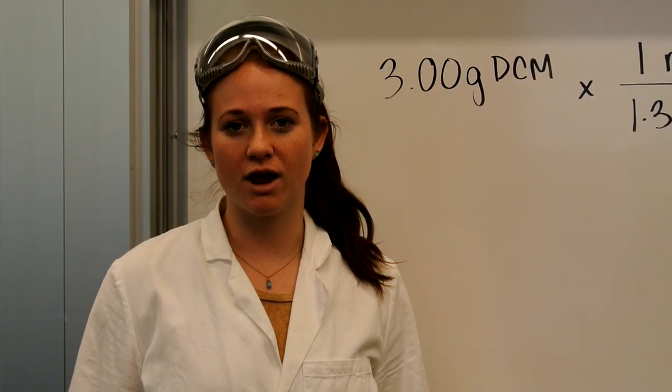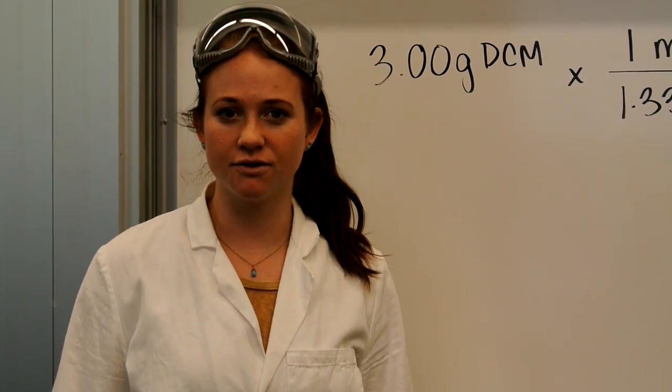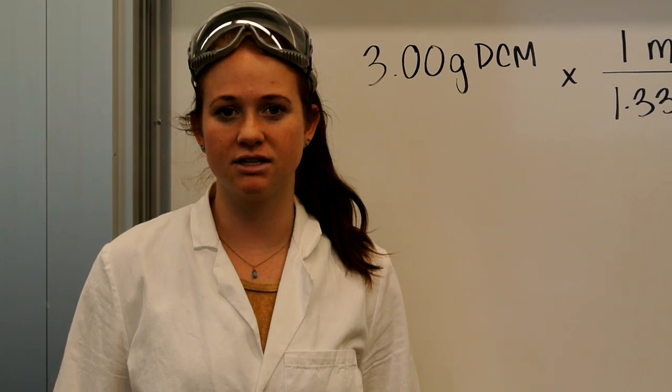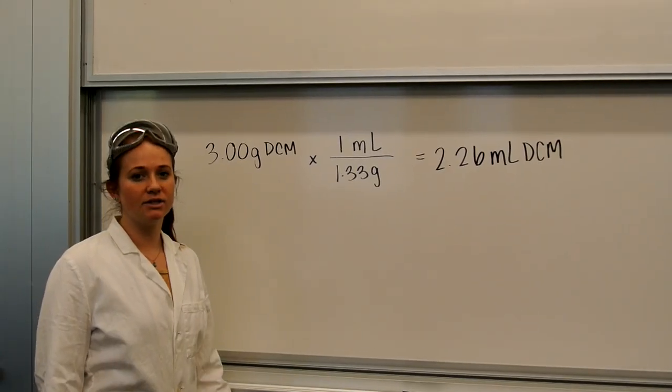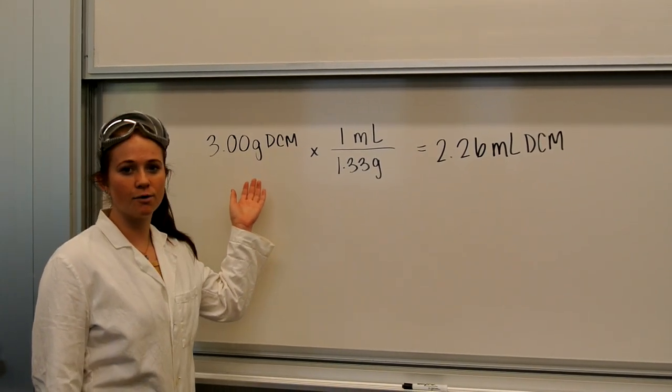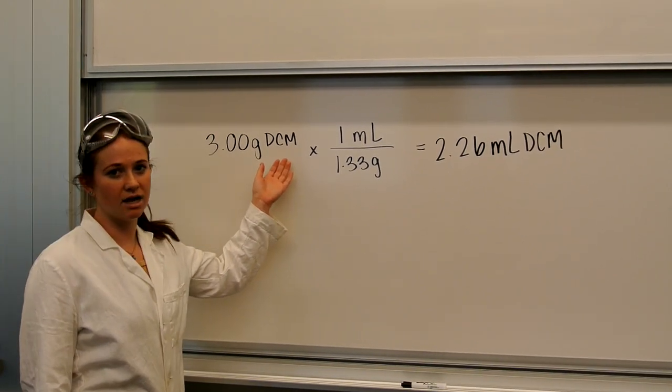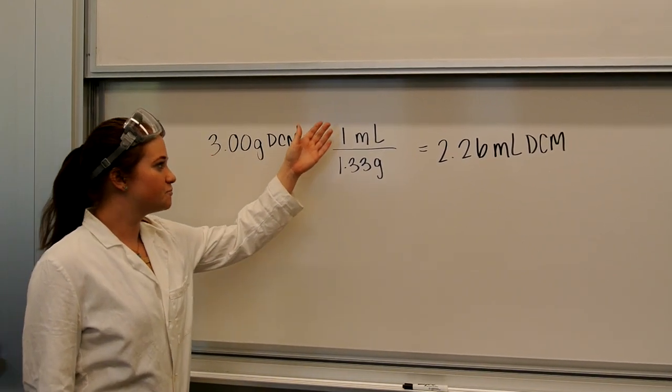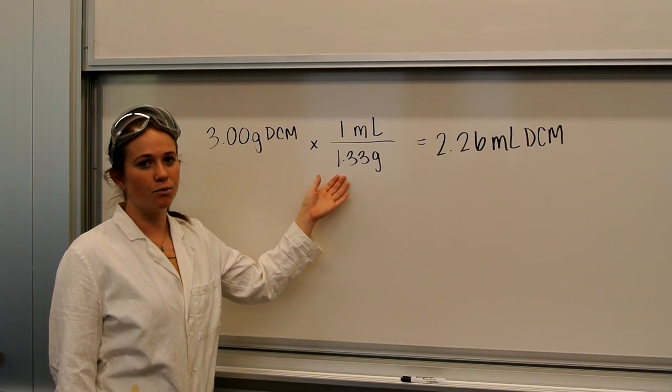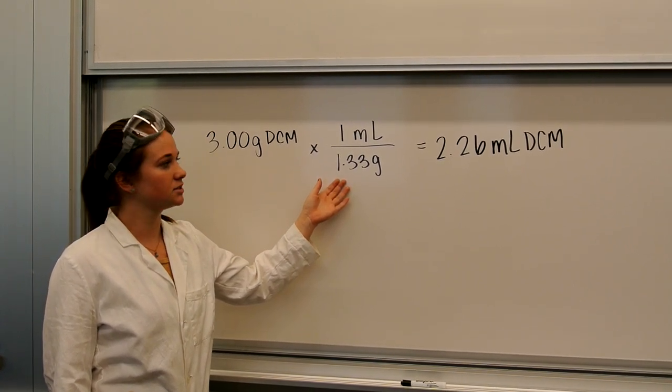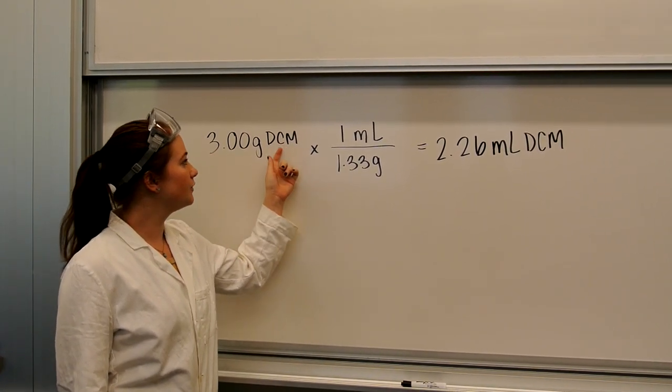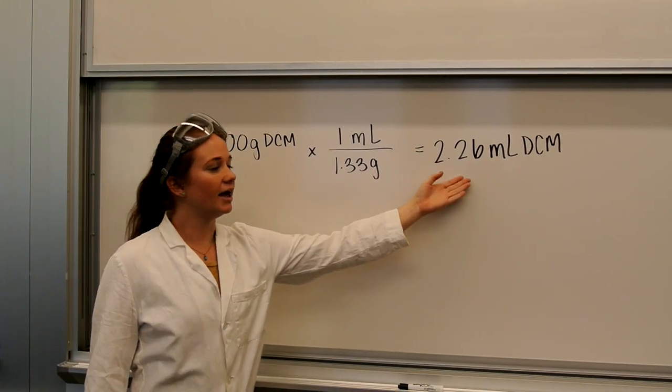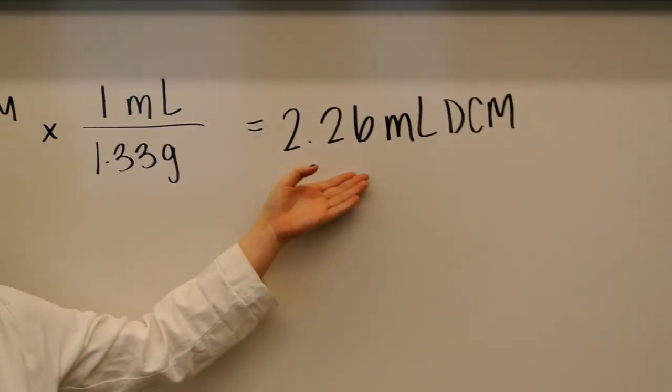If you're given the amount in grams instead of milliliters, you're going to need to convert into milliliters using the density of the liquid. Let's say we need to measure out 3 grams of dichloromethane, abbreviated as DCM. We take the density of dichloromethane, 1.33 grams per milliliter, and divide to cancel out the grams, and are left with 2.26 milliliters of dichloromethane.